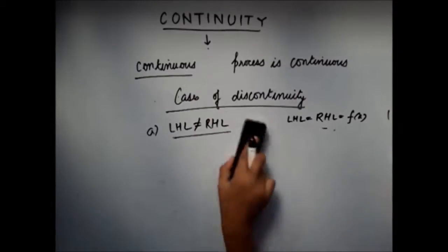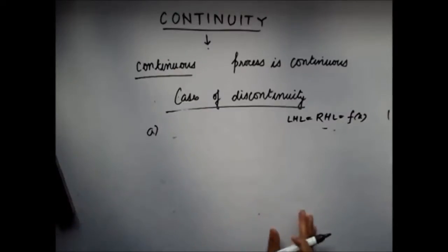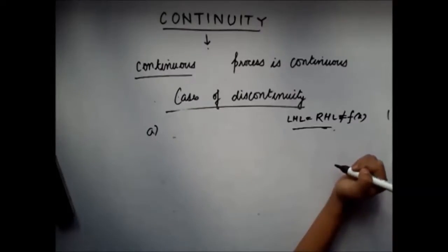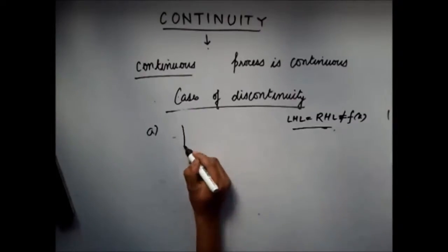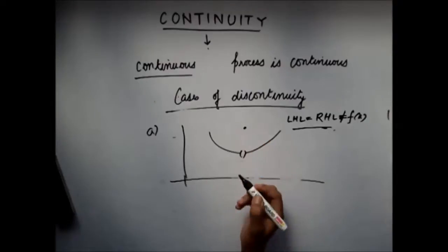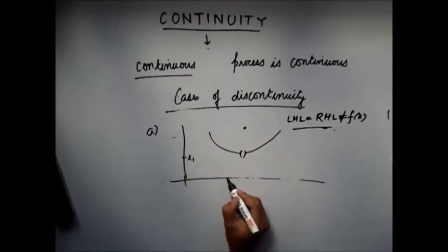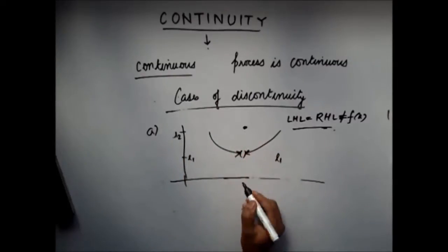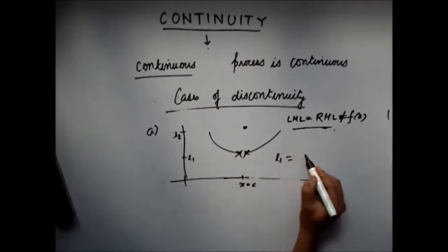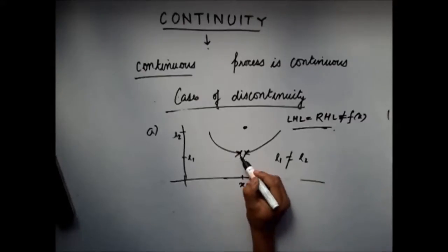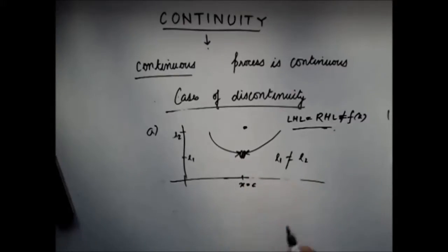Now, the second condition which could prove that a function is discontinuous is that the left and right hand limits are equal to each other, but the limit is not equal to the functional value. You can see that the limiting value at this point is equal to L1, but the functional value is equal to L2. So L1 is not equal to L2, and the function is discontinuous. Again, you can see that there is a hole at this point, so graphically you can easily say the function is discontinuous.